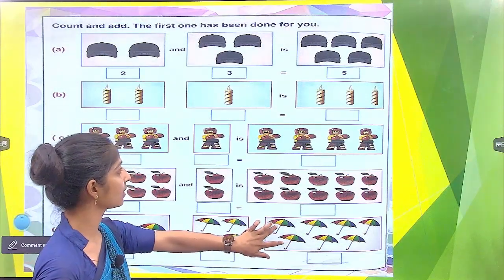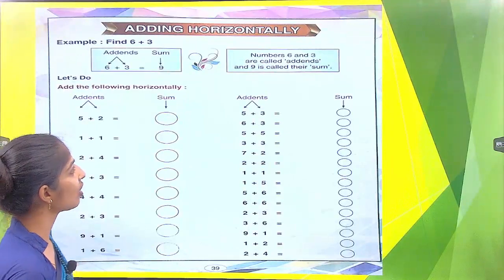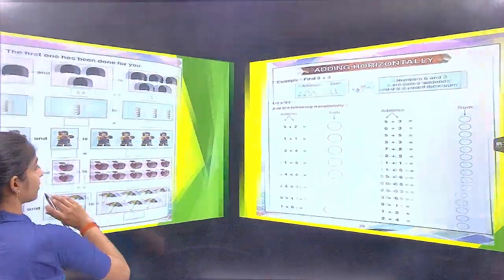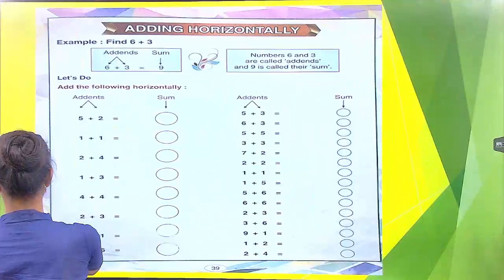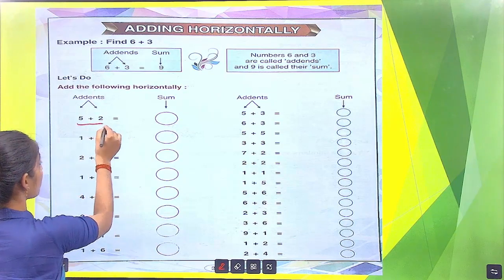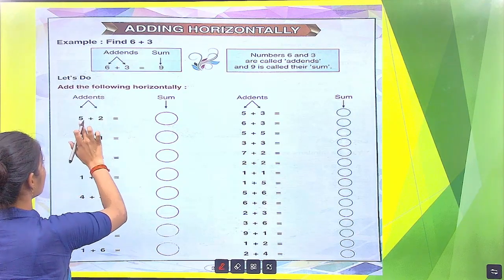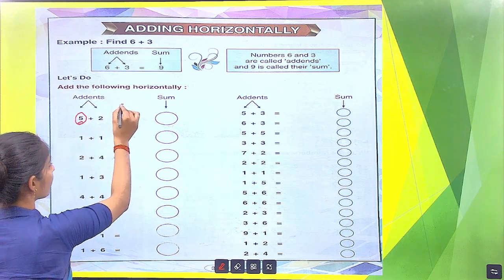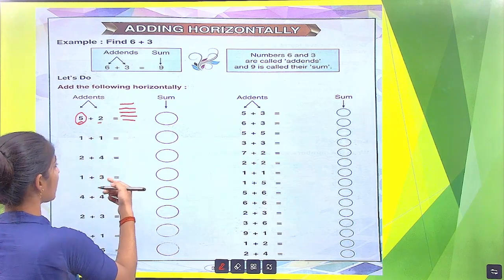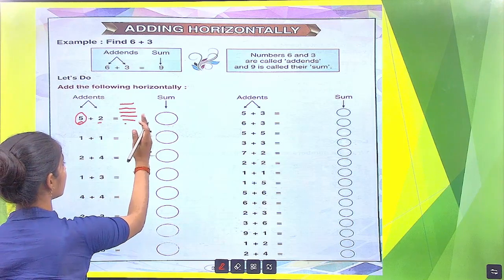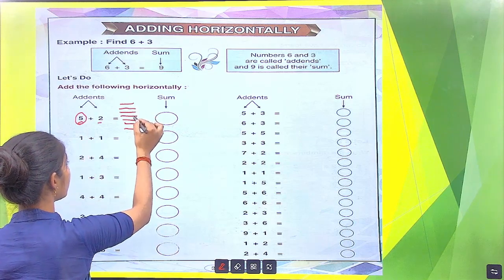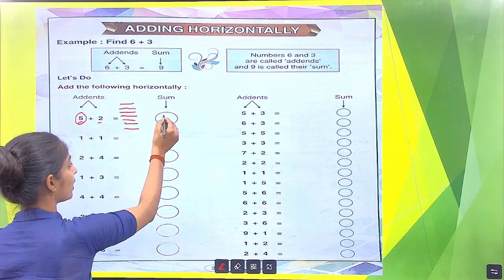Do the exercise with the help of your parents. Open your next page. Addition horizontally — we add numbers horizontally. There are 5 and 2. We draw 5 lines: 1, 2, 3, 4, 5. Then we draw 2 more lines: 1, 2. Now calculate the whole lines: 1, 2, 3, 4, 5, 6, 7. So we put here 7.